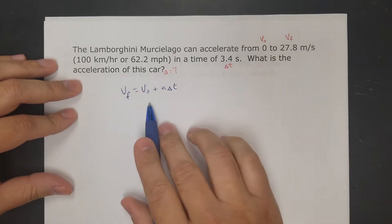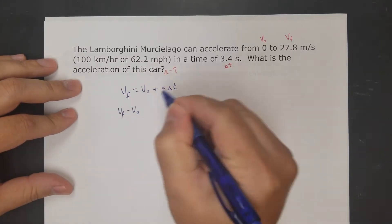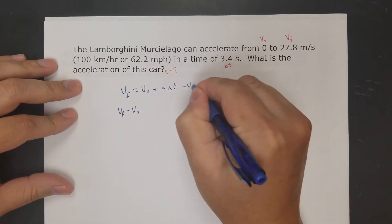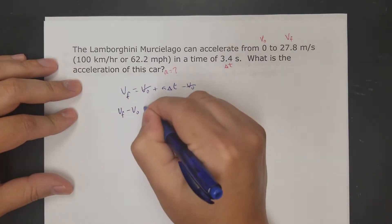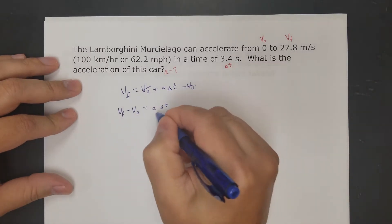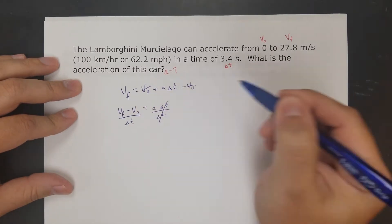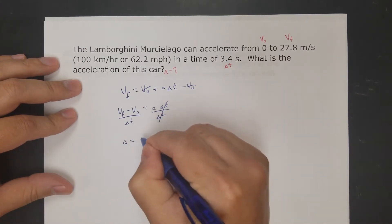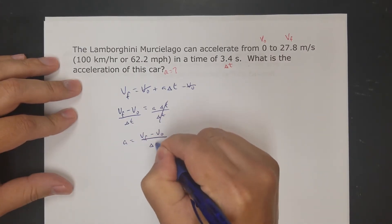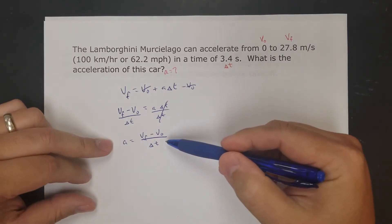I want to solve for the acceleration. I'm going to subtract the initial velocity. That's going to get rid of that, and that's going to equal a times delta t. Then I'm going to divide by delta t. Cancel that out. And now I have acceleration equals final minus initial velocity over my time interval.